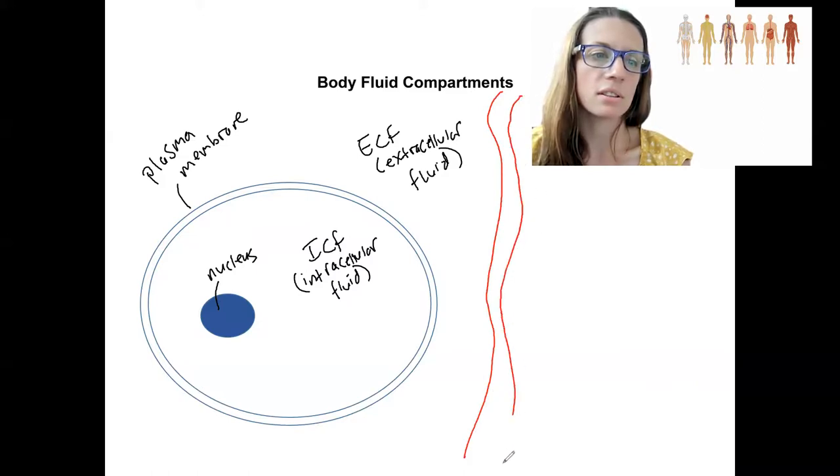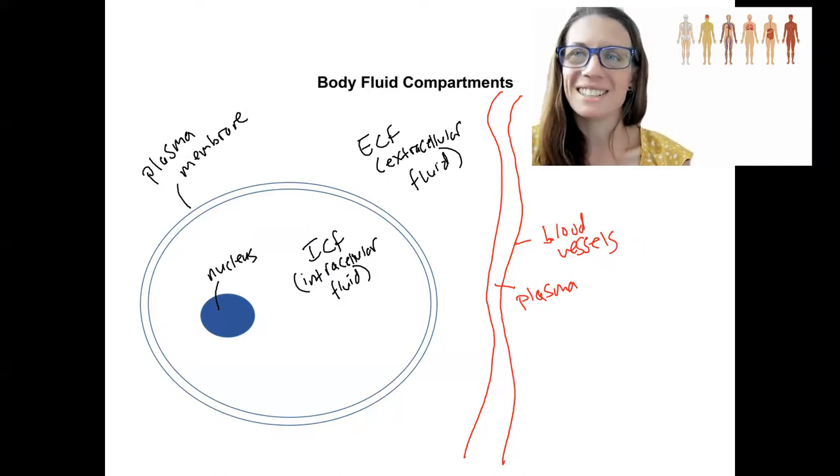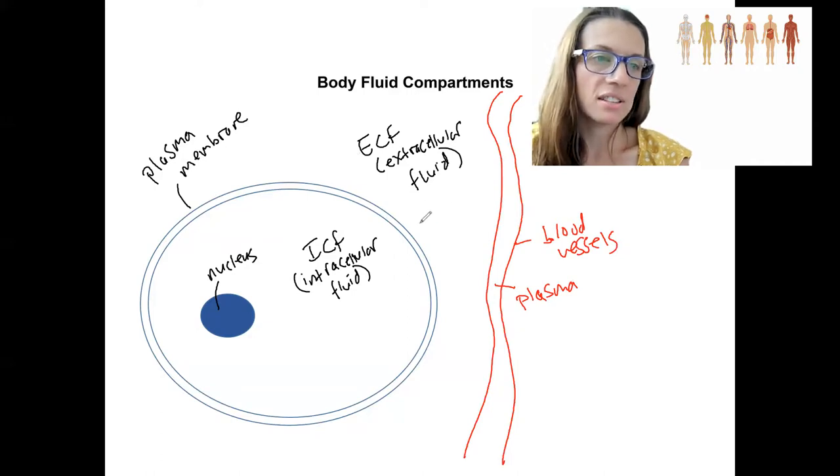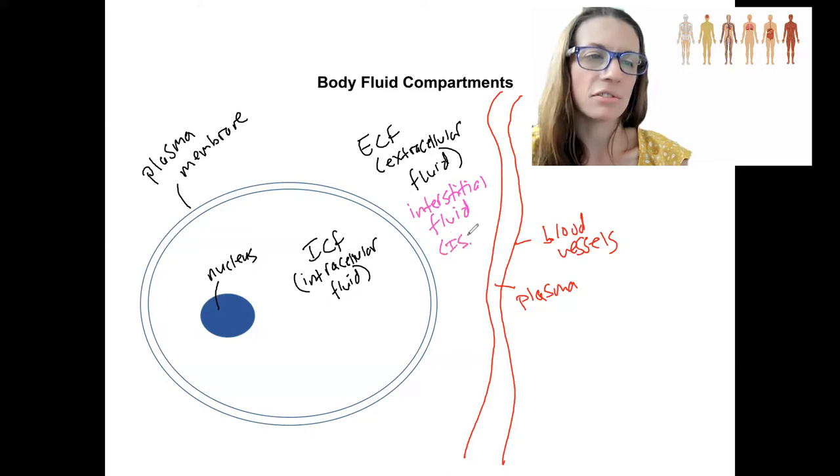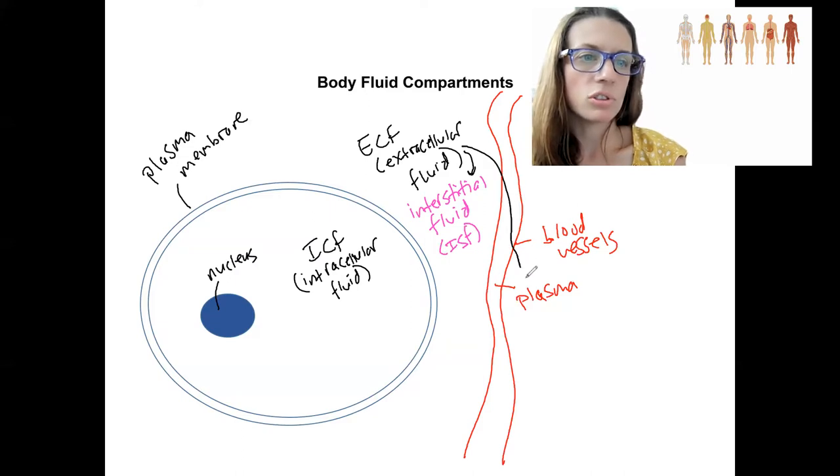What do you think this thing is? This is a blood vessel. It's going to contain a lot of fluid, a lot of extracellular fluid, specifically plasma. Plasma is a type of extracellular fluid. The other type of extracellular fluid is this stuff here. It's right outside of the cell, but it's not in the blood vessels. This is called interstitial fluid. Interstitial fluid. And then you'll see it ISF. So the extracellular fluid is made up of those two components.